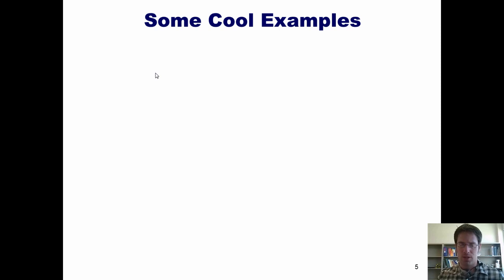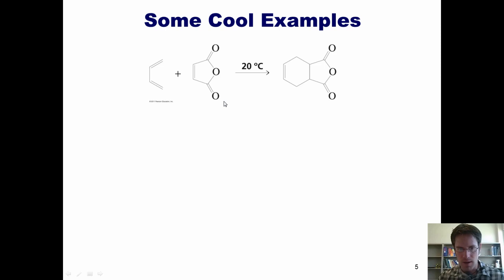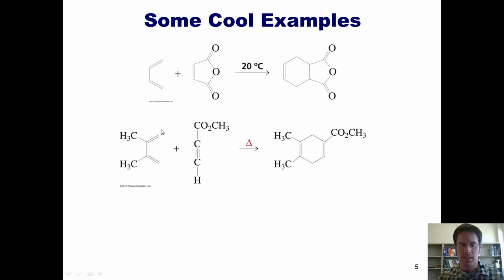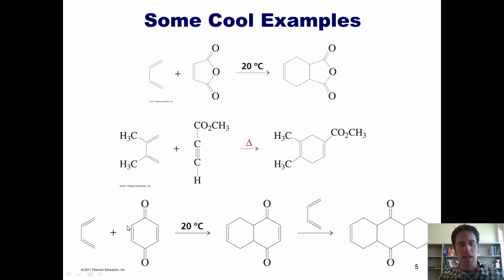Here are several examples of different Diels-Alder reactions. If I react 1,3-butadiene with maleic anhydride, I get a polycyclic product — a reaction my organic chemistry students actually do in lab. Similarly, I can react a diene with an alkyne to get another product, or with a cyclic diene to give an intermediate. If that intermediate, which is also an alkene, behaves as a dienophile in a subsequent Diels-Alder reaction, we can get a tricyclic product.